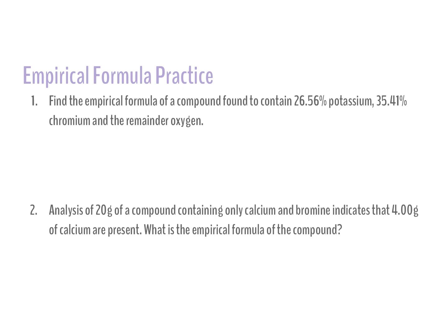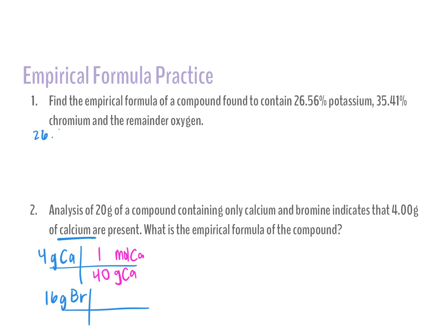Find the empirical formula of a compound that contains 26.56% potassium, 35.41% chromium, and the remainder oxygen. I know my percentages must add up to 100, so 100 minus 26.56 minus 35.41 gives me about 38.03 grams of oxygen. So my knowns are: 26.56 grams potassium, 35.41 grams chromium (Cr), and 38.03 grams oxygen.